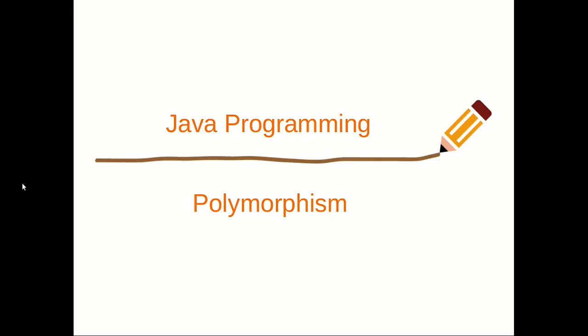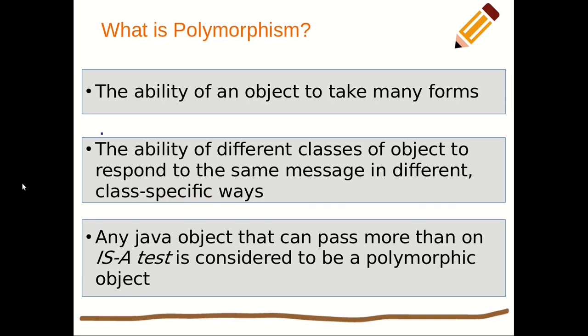Hello and welcome back. Today we're looking at polymorphism. What is polymorphism? The ability of an object to take many forms, or we can say the ability of different classes of objects to respond to the same message in different class-specific ways. Any Java object that can pass more than one IS-A test is considered to be a polymorphic object.